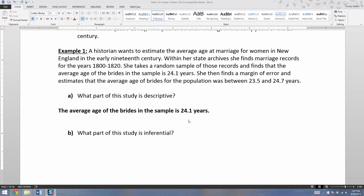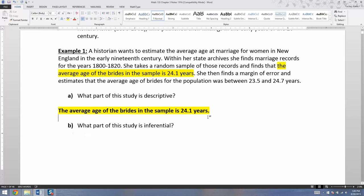So what part of the study is descriptive and what part of the study is inferential? The part of it that's descriptive is this part right here. When she takes the random sample and finds that the average age of the brides in the sample is 24.1 years, that is descriptive. It is describing exactly what she found. In her sample, that's what she got. The average age is 24.1 years.